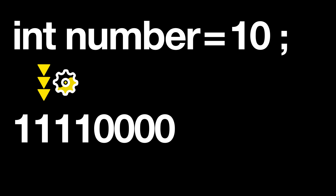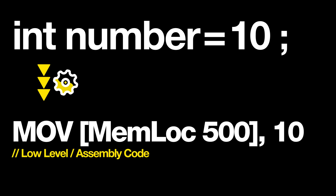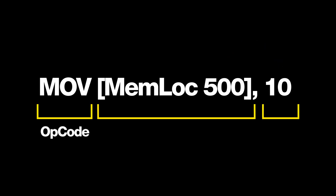Instead, the first step is to translate our high-level code to assembly, a low-level language that helps with portability so our code can run on different types of processors. This instruction means that we move 10 to memory location 500. The binary representation of the instruction follows: 'move' is called an operation code, specifying the role of the instruction.